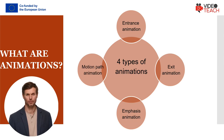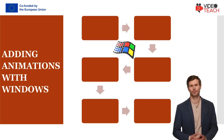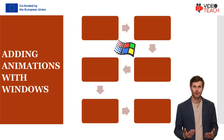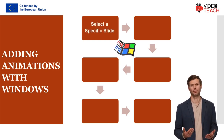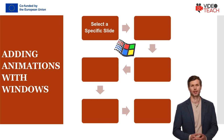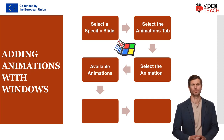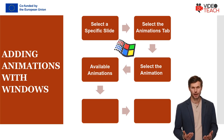Motion path animations make elements on the slide move from one place to another along predefined paths. Here's how you can apply animations in your presentation in Windows: open the PowerPoint presentation that you want to edit and select a specific slide. Click on the object that you want to animate, select the Animations tab at the top menu bar, and click Add Animation. You'll see a list of all the available animations that you could apply to your project.